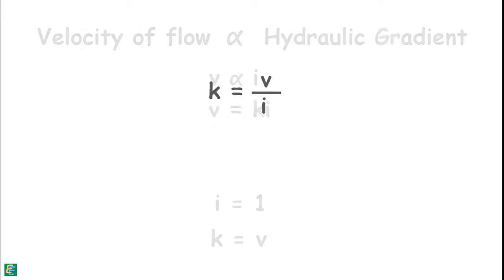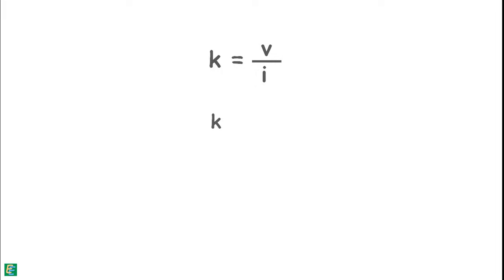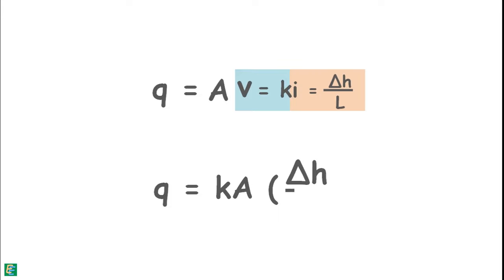The coefficient of permeability has the dimensions of velocity, as hydraulic gradient is dimensionless because it is length divided by length. Discharge through the soil can be written as cross-sectional area of the soil multiplied by velocity of flow, which becomes q = K × A × (h / L).